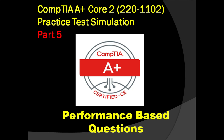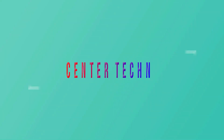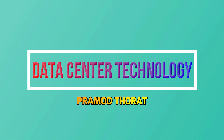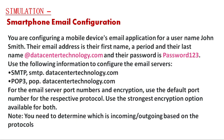Let's go to the question. This is the simulation: Smartphone Email Configurations. You are configuring the mobile device's email application for username John Smith. Their email address is their first name, a period, then their last name at datacentertechnology.com.